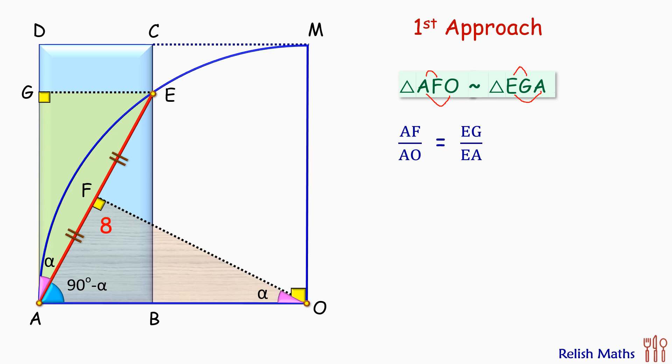Putting the values, we have AF is 4 centimeters and EA is 8 centimeters. Now if we'll see AO, AO is the radius of the quadrant. So AO is equals to OM.